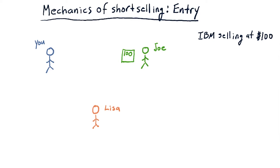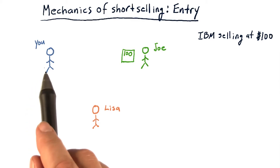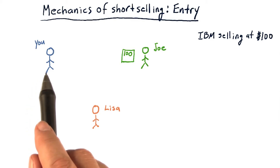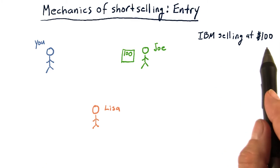I'm going to step you through the mechanics of short selling. Pay attention, because it's complicated. Let's imagine the following scenario: you want to take a short position in IBM, and IBM is currently selling at $100.